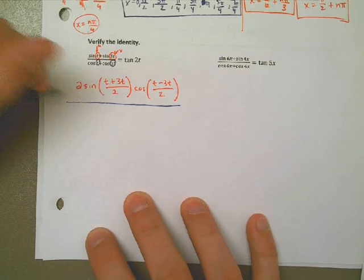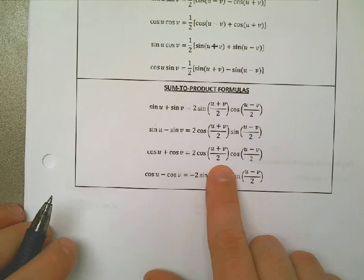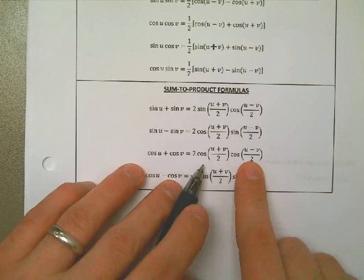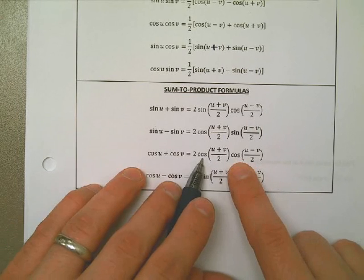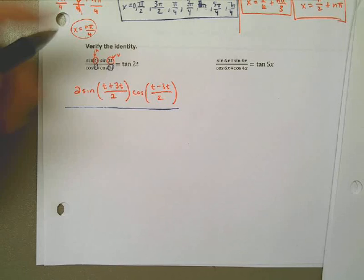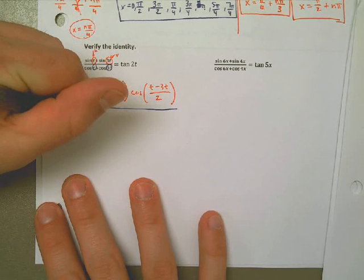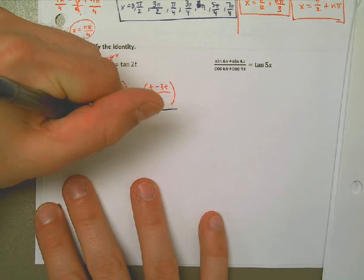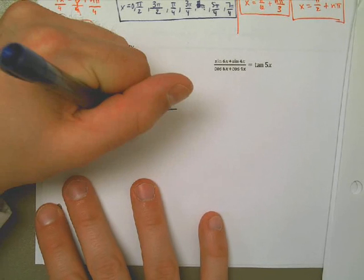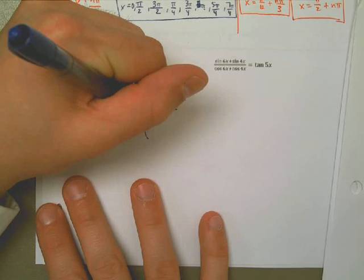So using the formula sheet as a guide, I see 2 cosine u plus v, which is t plus 3t all over 2, cosine of t minus 3t all over 2. That is equal to the tangent of 2t. That's how far I've gotten so far. Baby steps. So I've replaced this with the product. I've replaced the bottom with the product.